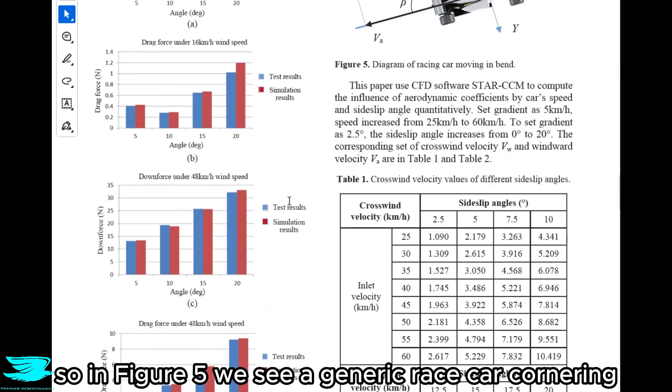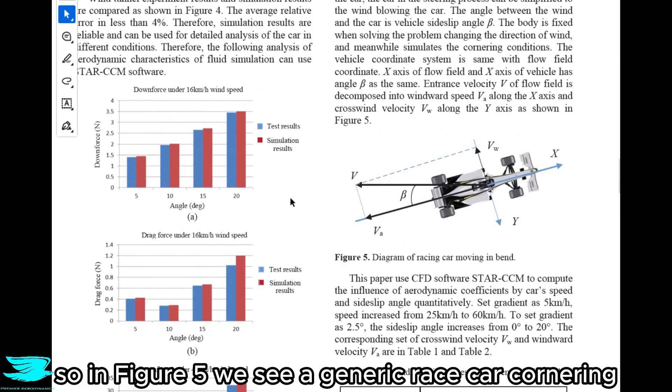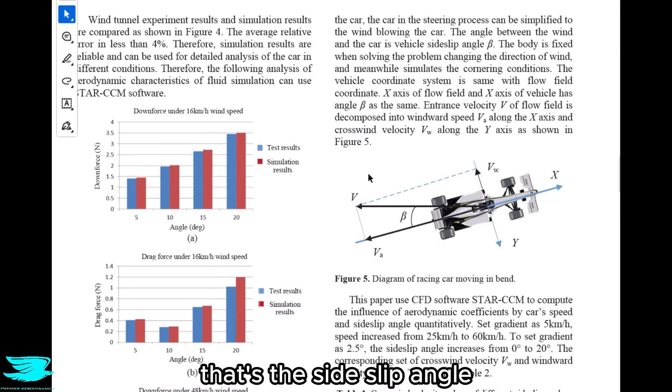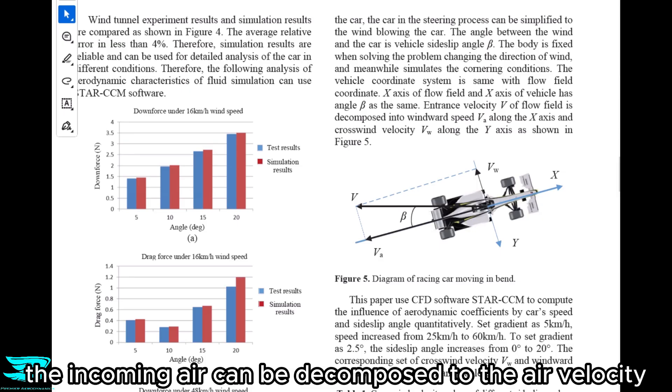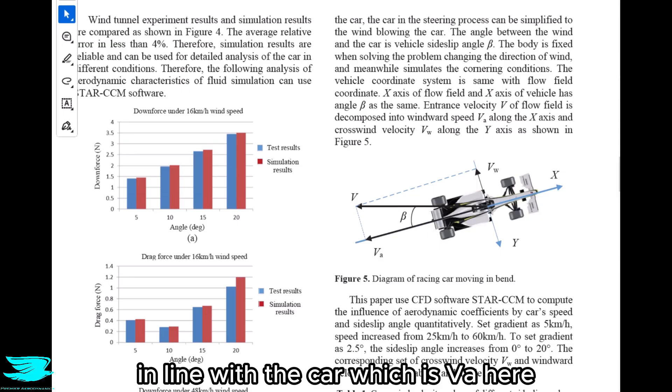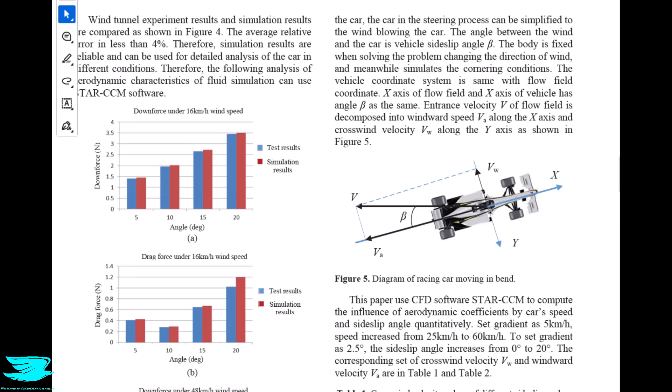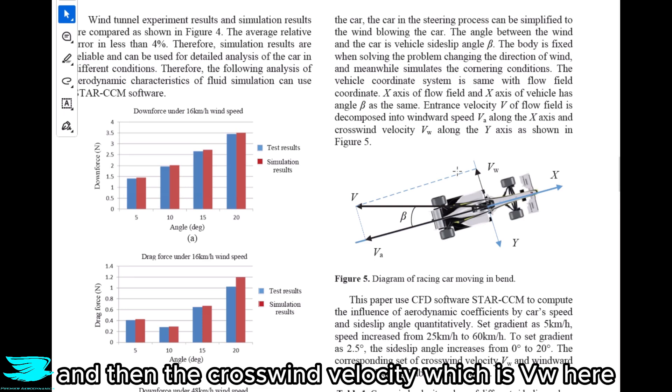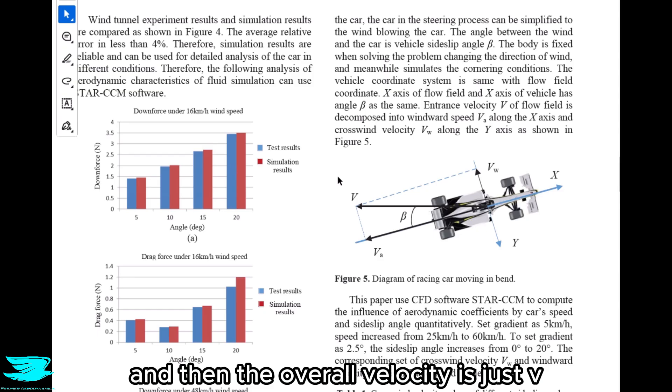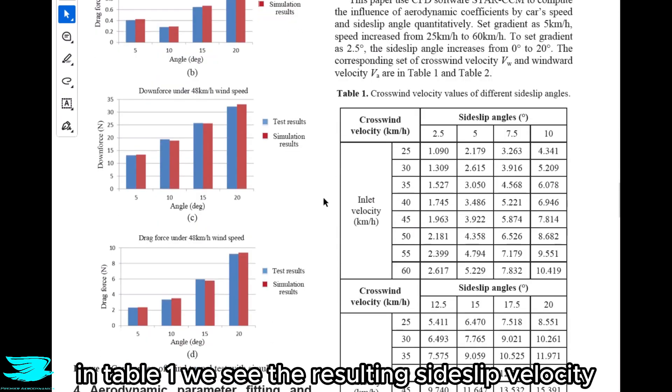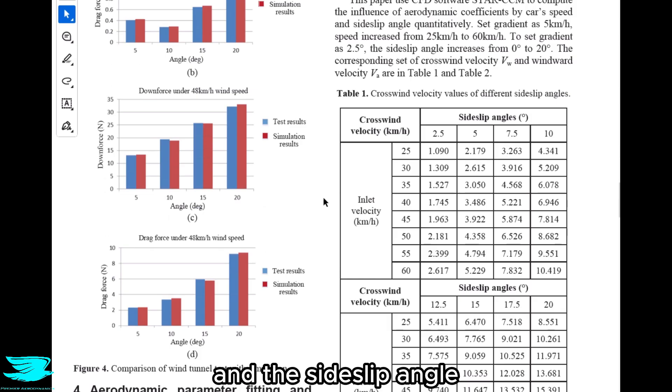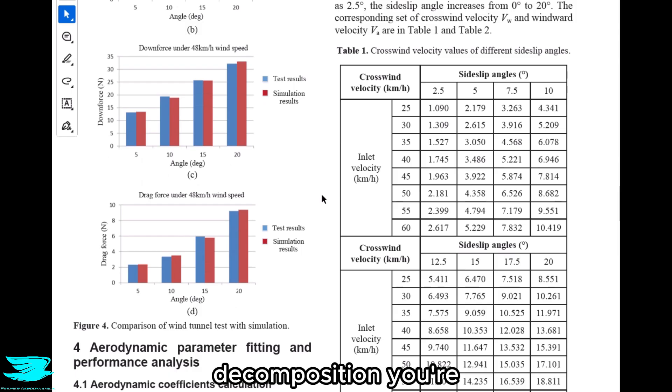In figure 5 we see a generic race car cornering. The most important part here is this beta angle. That's the side-slip angle. This is the angle of the incoming air to the car. As a result of this side-slip angle, the incoming air can be decomposed to the air velocity in line with the car, which is VA here, and then the crosswind velocity, which is VW here. And then the overall velocity is just V. In table 1 we see the resulting side-slip velocity and the side-slip angle with different inlet velocities. This is literally just a basic trigonometry decomposition. You're decomposing the incoming flow into the side-slip flow, so that's very straightforward. You just use sine beta times by the incoming flow to get this crosswind velocity.